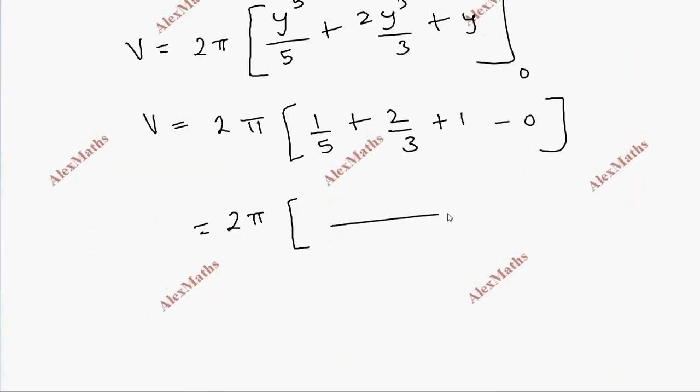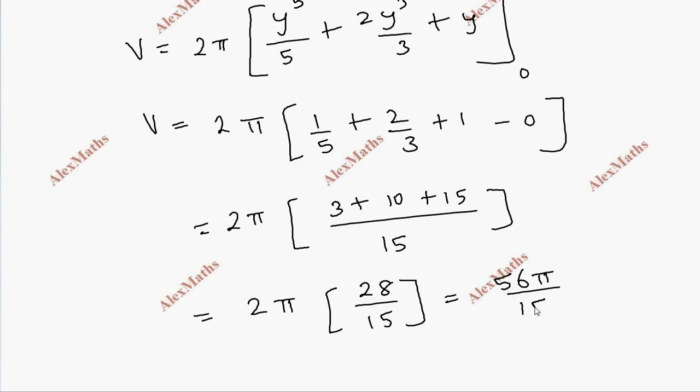So 2 pi, now LCM is 15. So 5 and 3 is 15. This is 3, this is 10, this is 15. The total are 2 pi, this is 28 by 15. This is 2 on the left side, 56 pi by 15 cubic units.